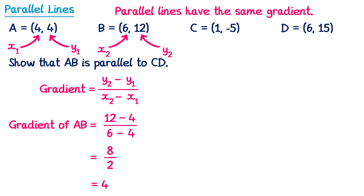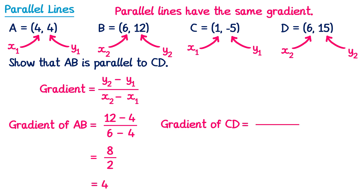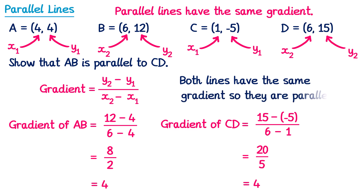So the gradient of AB is 4; we need to show the gradient of CD is also 4. Labelling the coordinates: x1 is 1, y1 is negative 5, x2 is 6, and y2 is 15. Substituting: gradient of CD equals 15 minus negative 5 over 6 minus 1. On the top, subtracting a negative gives 15 plus 5 which is 20; on the bottom, 6 minus 1 is 5. So 20 over 5 is also 4. We can write the concluding statement: both lines have the same gradient, so they are parallel.